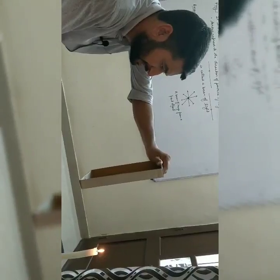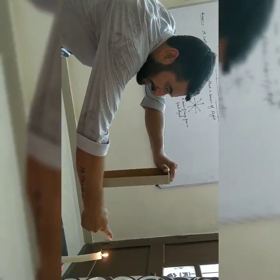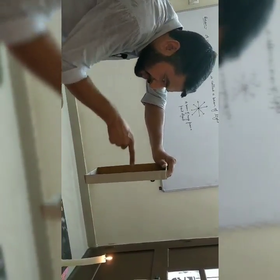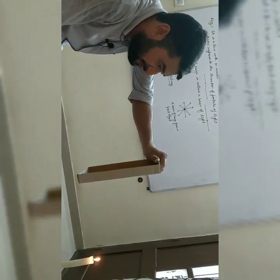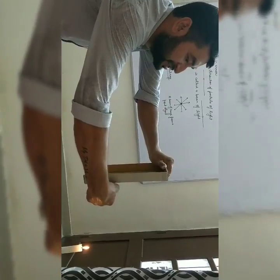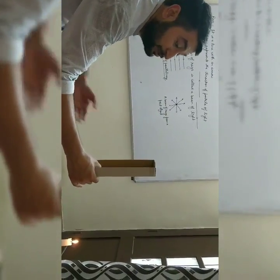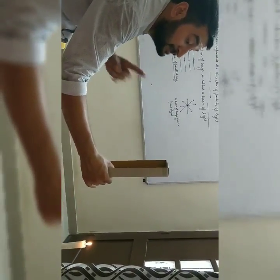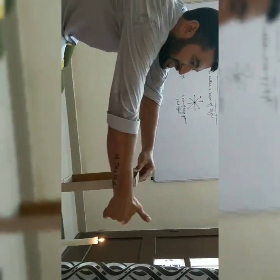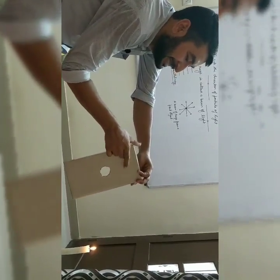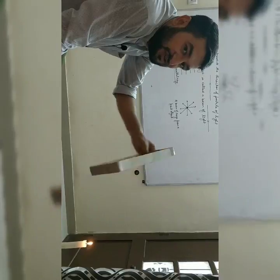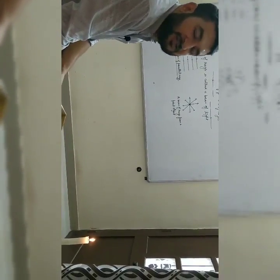But if you displace this cardboard either below or above, then you can't see the light coming from the candle. What happens is the light from the candle passes straight through the hole to our eyes, but if the cardboard is displaced, the light strikes on the opaque part and cannot pass through it, so the candle flame is not visible. This activity proves that light always travels in a straight line.